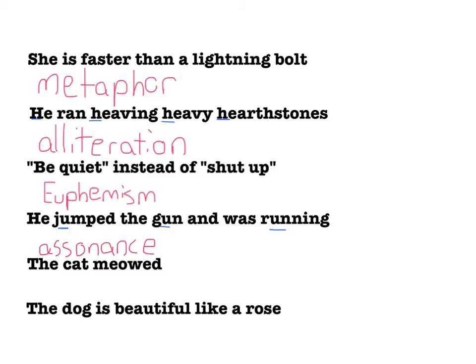'The cat meowed.' The word meow is what literary term? Of course, the answer is onomatopoeia. And finally: 'The dog is beautiful like a rose.' We immediately see the word like, and the dog is being compared to the rose. So if we have a comparison using like or as, what do we have? The answer is simile.